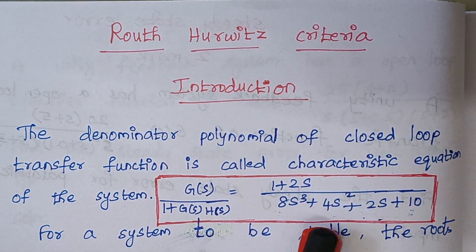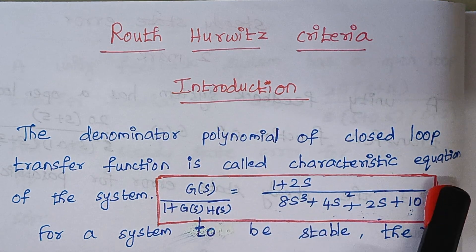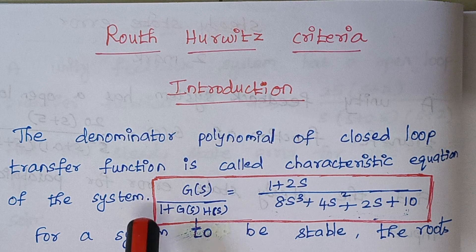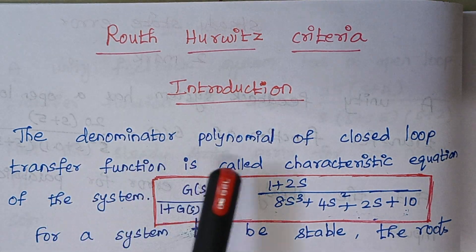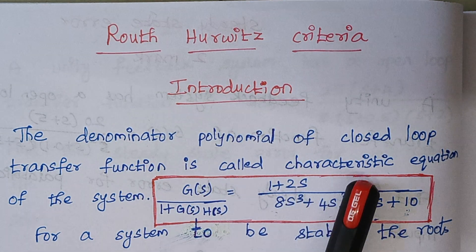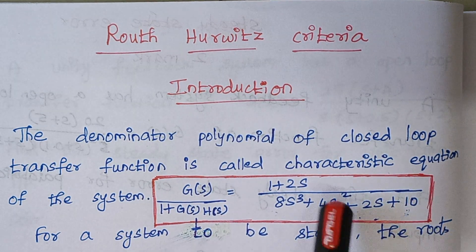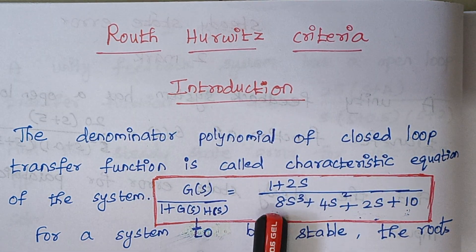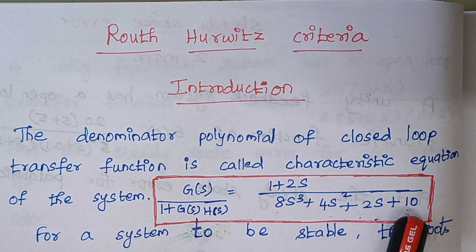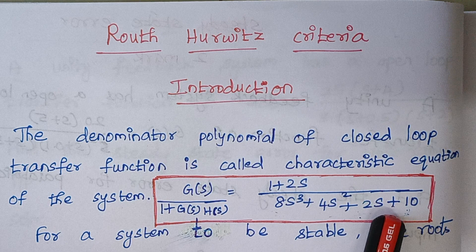So in this expression, this denominator term is known as characteristic equation. So here I had written that one. The denominator polynomial of closed loop transfer function is called characteristic equation. So in the given example, this part 8s cube plus 4s square plus 2s plus 10 is the characteristic equation.